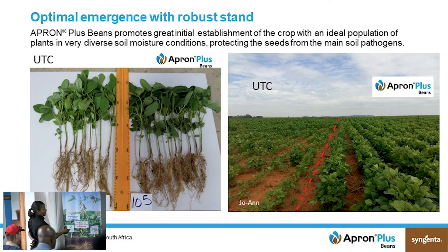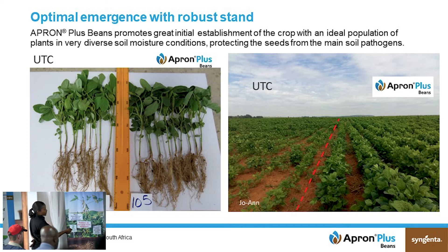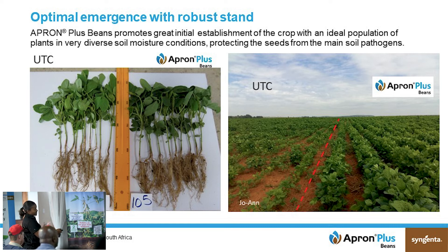In the field, if you see this red line demarcating the plots — these were planted on the same day — but on this side, the untreated control, you can already see how scanty the field is on the left. On the other side, the plot treated with Apron Plus Beans shows better vigor, plant count, and is a much better-looking field overall.